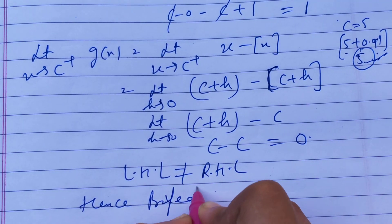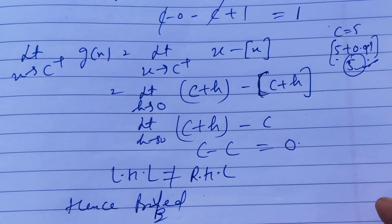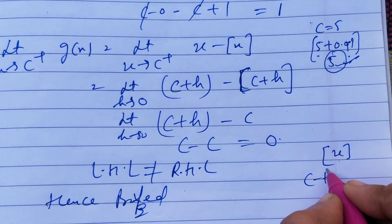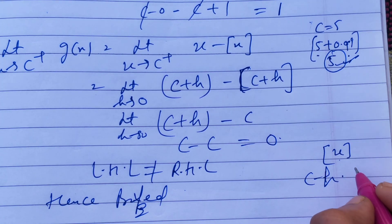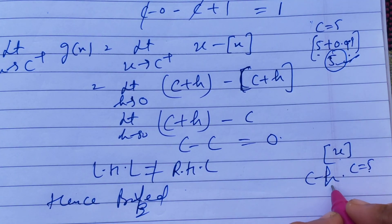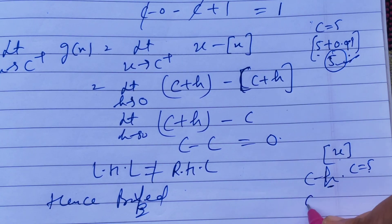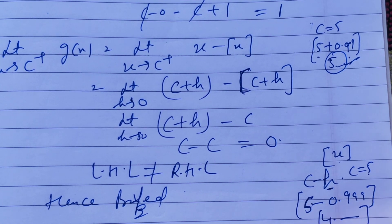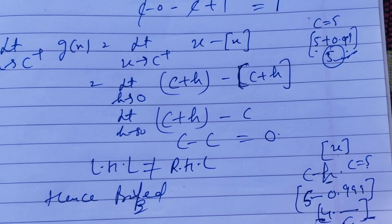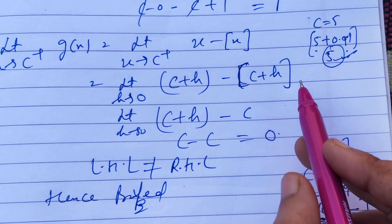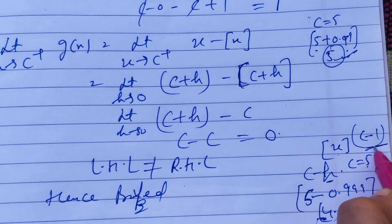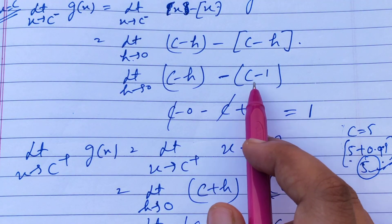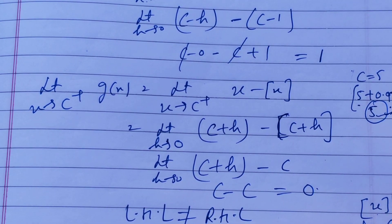This completes our proof for question 19. The key thing to remember about the greatest integer function is: in the left-hand limit, we use c minus h. Since h is very small, like 0.999 something, the value falls just below c, giving greatest integer as c minus 1.